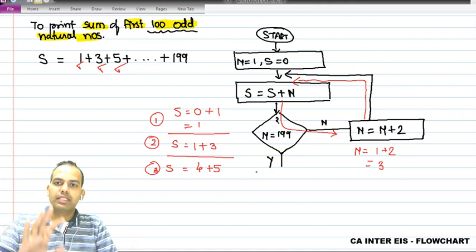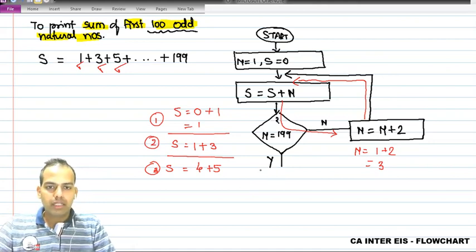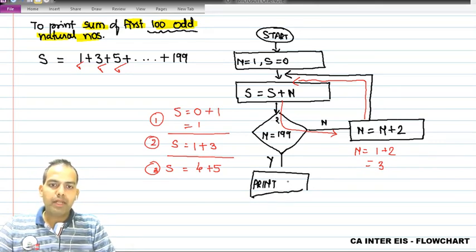At the end of the day you will see that the total value in s will be stored as sum of first 100 odd natural numbers. So I have to take the print. So print command is as usual. You can create in your own way, no problem. Print s. Now the program will start, so simple.